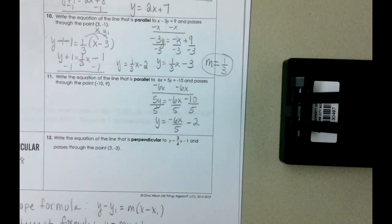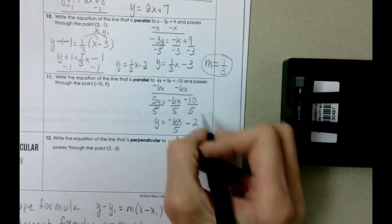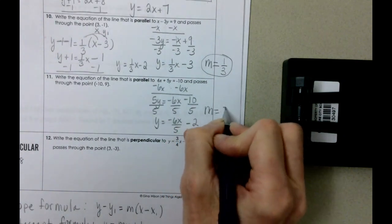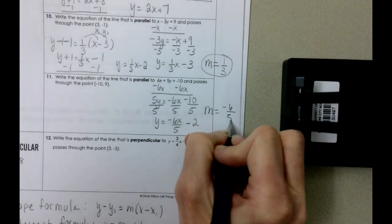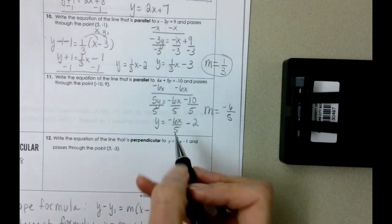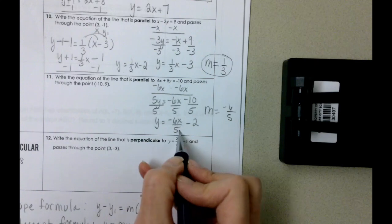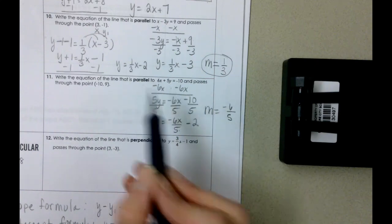Again, slope. Parallel lines have the same slope. So this is going to be negative six fifths is the slope that we're going to use. It is the slope of this line, and parallel lines have the same slope.